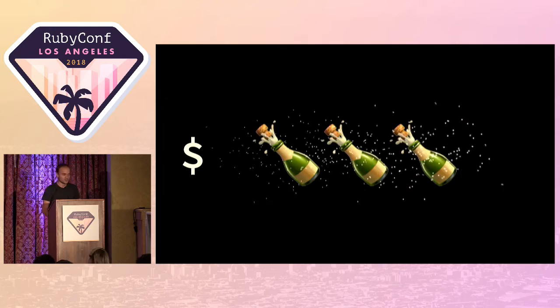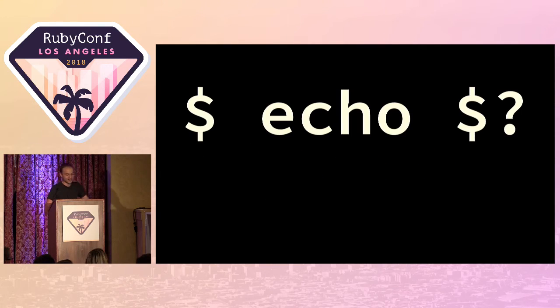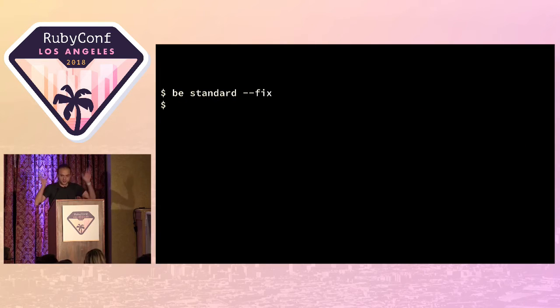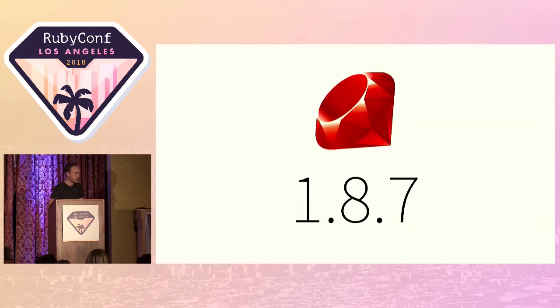After you type that and hit enter, if you see nothing, that means you win. You can check the exit code — it exited cleanly — and you just don't worry about it anymore; it gets out of your way. If there is an error, it'll tell you it can automatically fix a whole bunch of stuff, so you run standard fix and it just goes away. When you first add it to your project you'll get a whole bunch of issues, but standard fix will take care of most of them.